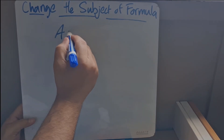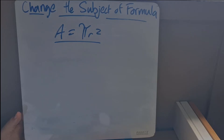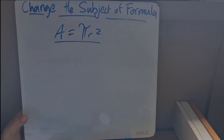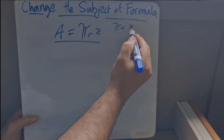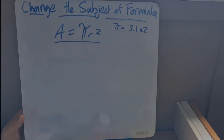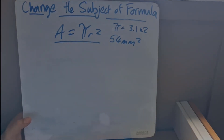Now this can get a little more complex when we are dealing with the area of a circle. Remember that formula is area equals pi r squared. Pi is always 3.142 — it's a constant. So let's say they give us the area and tell us that the area is 54 square millimeters, and we need to find the radius.